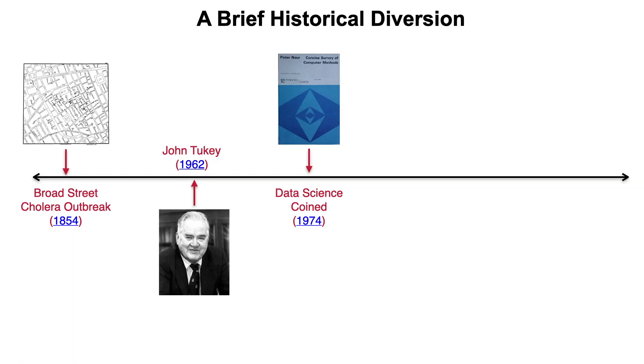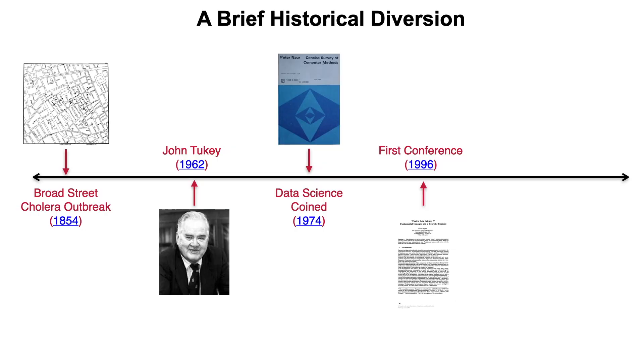The third event is when 'data science' was coined. In Peter Naur's seminal work 'A Concise Survey of Computer Methods' in 1974, he coined the term data science — a book about computational techniques now that computers were becoming more accessible. He defined the term in essentially the meaning we use today. The fourth event is the first conference around data science, in 1996 in Kyoto — the first public gathering with data science as its central theme.